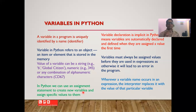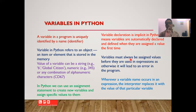In Python we use the assignment statement to create new variables and assign them a specific value. In Python it is not necessary to declare variables — unlike C or C++ where variable declaration is mandatory, in Python variable declaration is implicit and variables are automatically declared and defined when they get assigned a value for the first time. Variables must always be assigned a value before they are used in any expression.